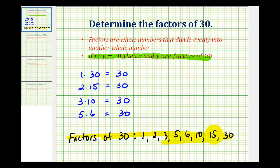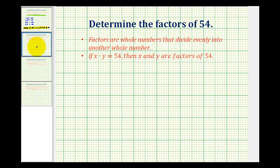Now as we try to determine the factors of larger and larger numbers, using a multiplication table like this does become much more challenging. So there's also a method for determining the factors using the prime factorization of the given number. So let's take a look at one more example using the prime factorization method — let's try to determine the factors of 54.